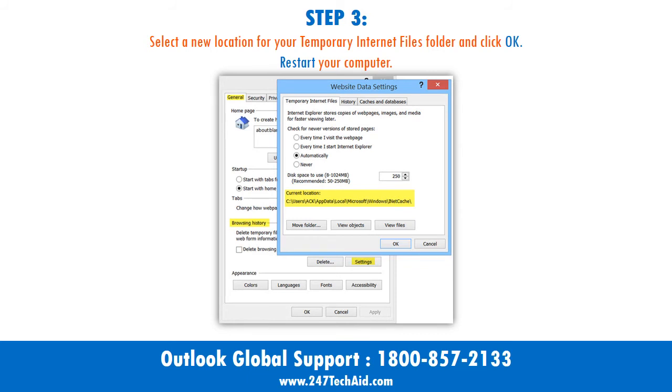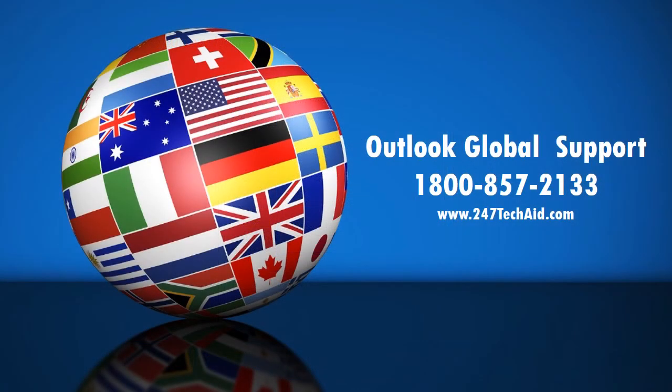Step 3: Select a new location for your temporary internet files folder and click OK. Restart your computer. Call now to troubleshoot your technical issues: Outlook global support 1-800-857-2133.